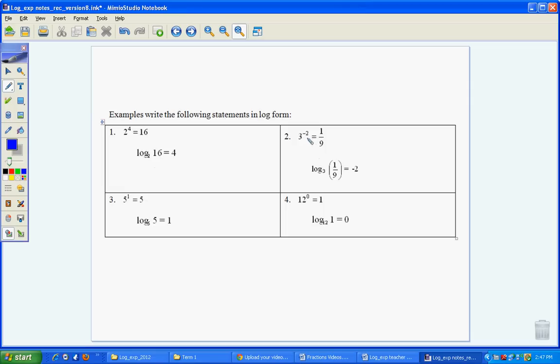3 squared, 3 to the power of minus 2 is 1 ninth, so log of 1 ninth power with base 3 would be equal to minus 2. And you can see the rules as we're starting to apply them.